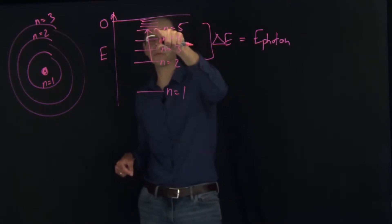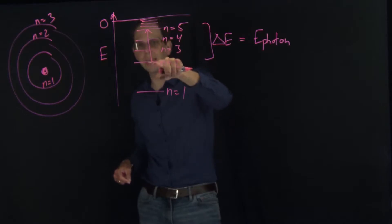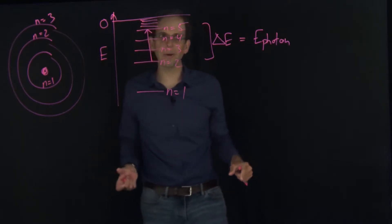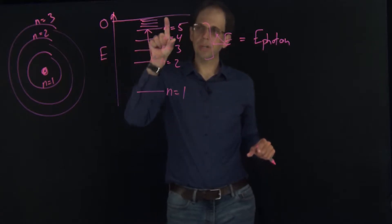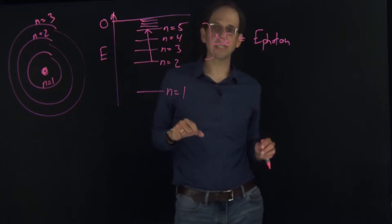Conversely, if I was in the n equals 5 state, it's possible that the electron could fall down to the n equals 2 state and emit light whose photon corresponds to this energy difference delta E.